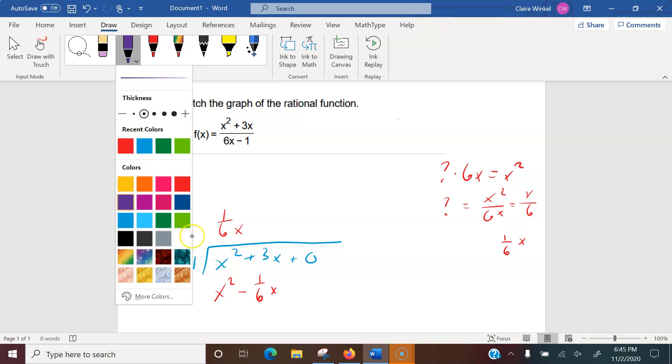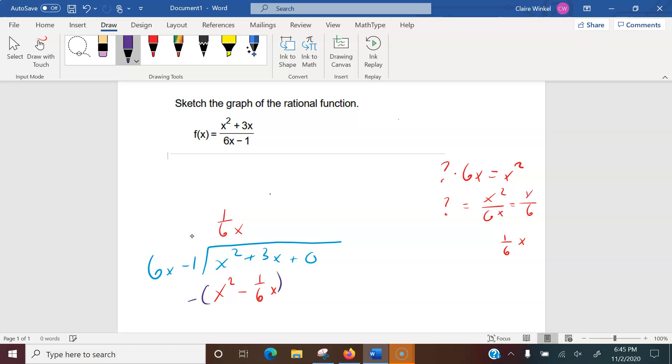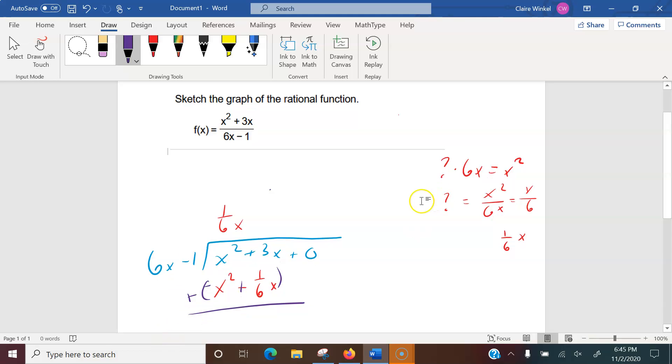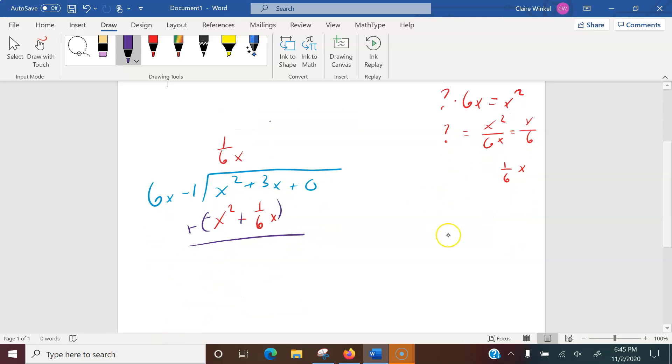Now we're going to subtract that, which of course we can turn into adding the opposite. When I add this together, I get 3x plus 1 sixth x. So that's 3 and 1 sixth, which is the same as 19 sixth. I think that's a little bit easier to write when we're doing long division. So this is 19 over 6x plus 0.